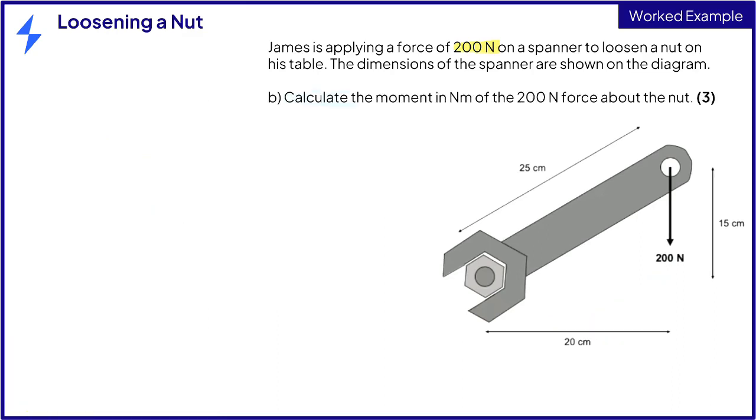Part B is to calculate the moment of the 200 newton force about the nut for three marks. You must first identify the pivot. In this question, this is the nut.